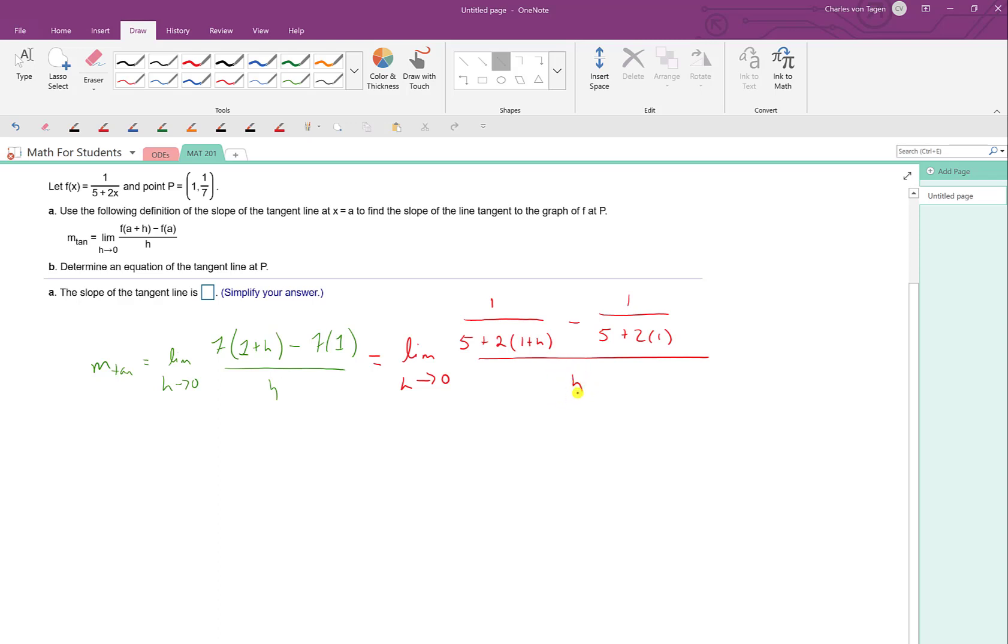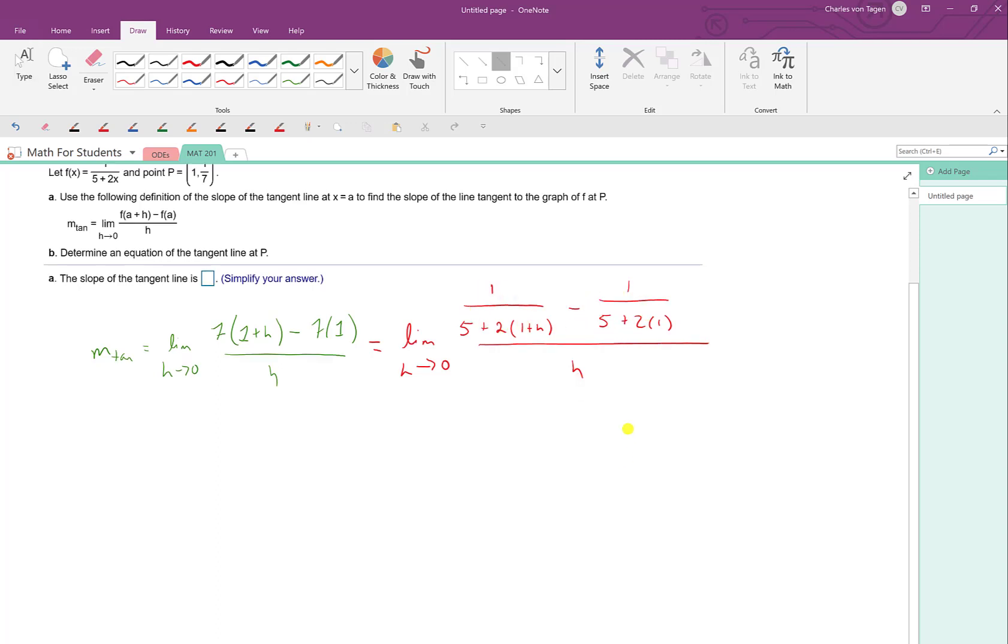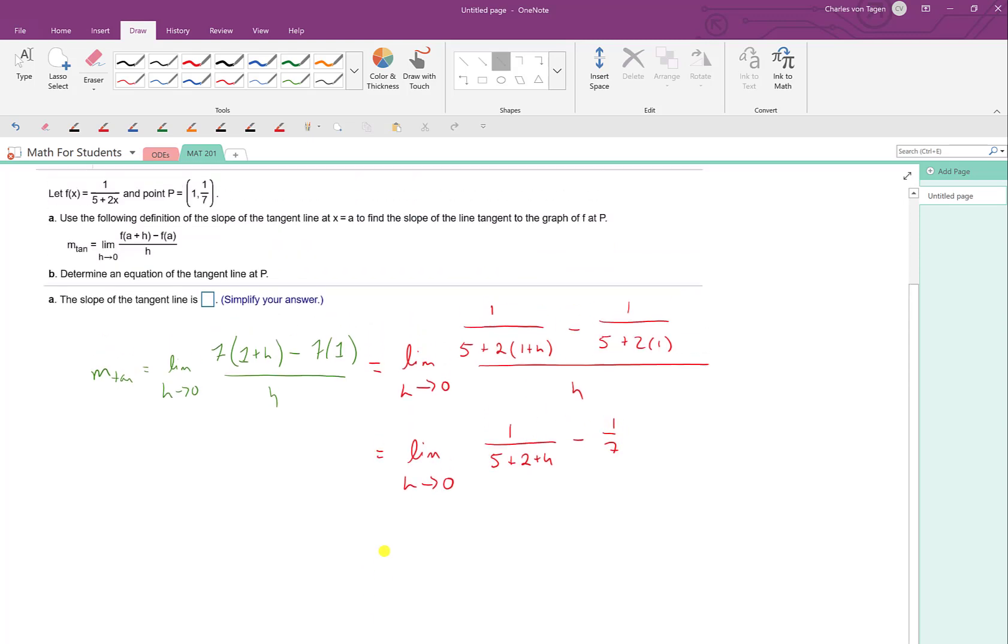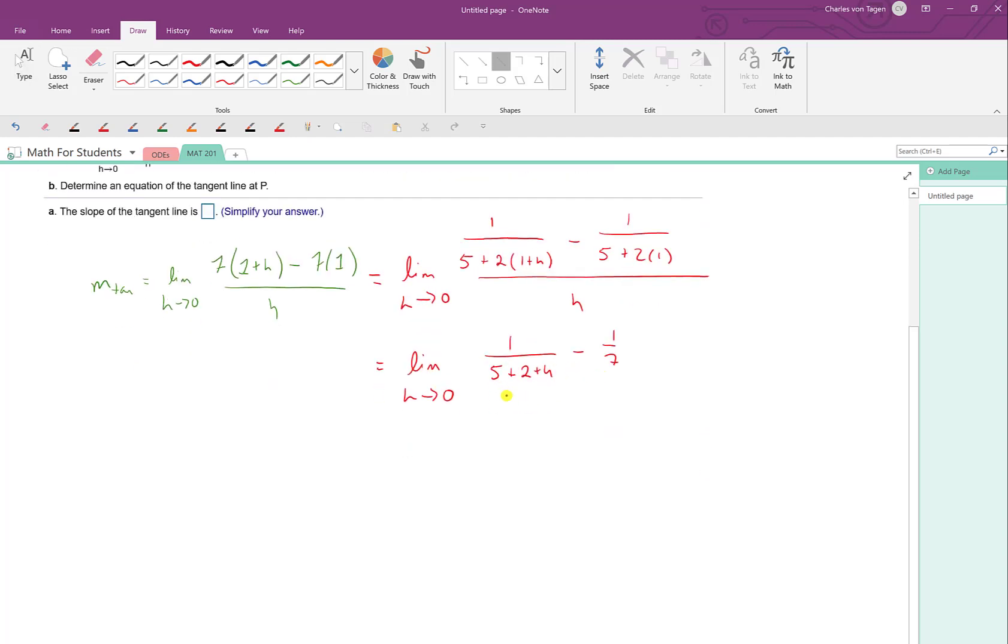So the trick that I recommend for this problem is to try to clear out the smaller fractions. Let's get rid of the smaller fractions in one step. Actually, before I do that, let's go ahead and simplify this expression here. So this gives us 1 over 5 plus, distributing here gives me 2 plus h minus, and then simplifying this expression, this comes out to be 1 7th, which we actually knew because it actually gave us the entire point that we were looking for. So we knew that that value was going to simplify to 1 7th all over h.